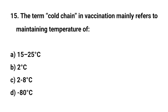Question number 15. The term cold chain in vaccination mainly refers to maintaining a temperature of? The right answer is C: 2 to 8 degrees centigrade.